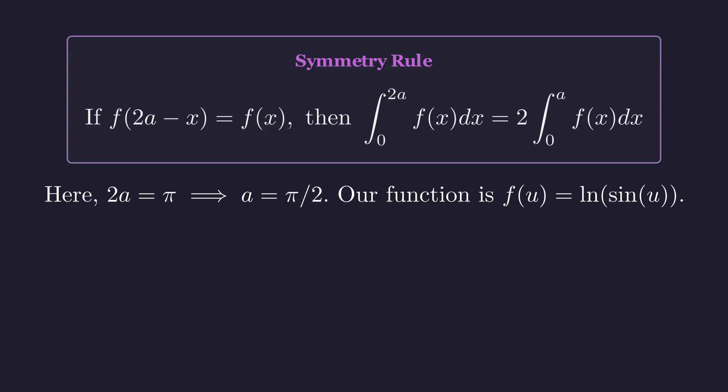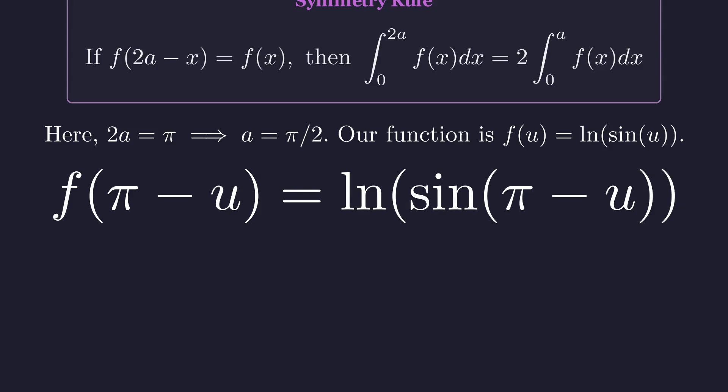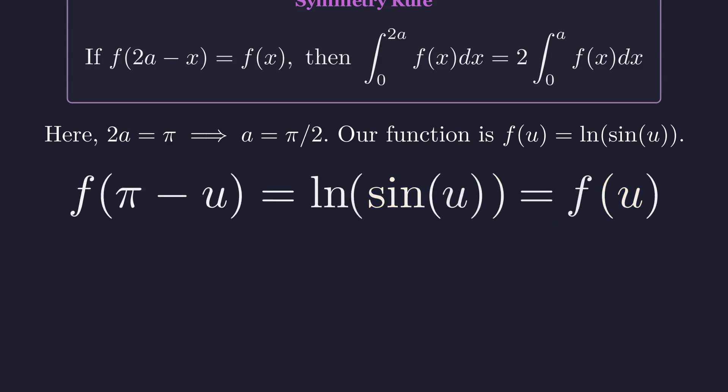Let's check if our function, natural log of sine of u, satisfies the condition. We need to evaluate the function at pi minus u. Using the trigonometric identity, sine of pi minus an angle is equal to the sine of the angle itself. Therefore, our function satisfies the symmetry condition.